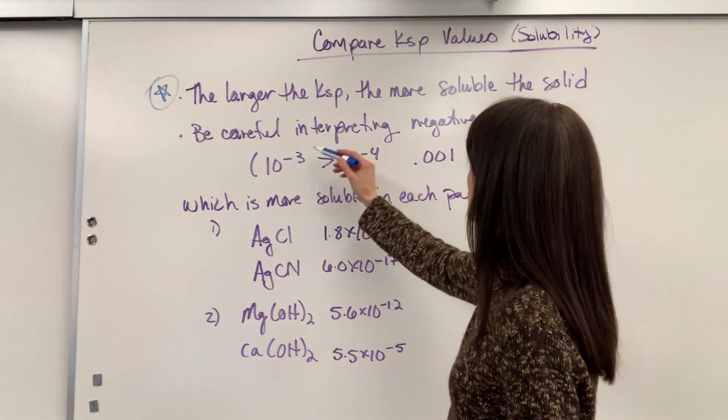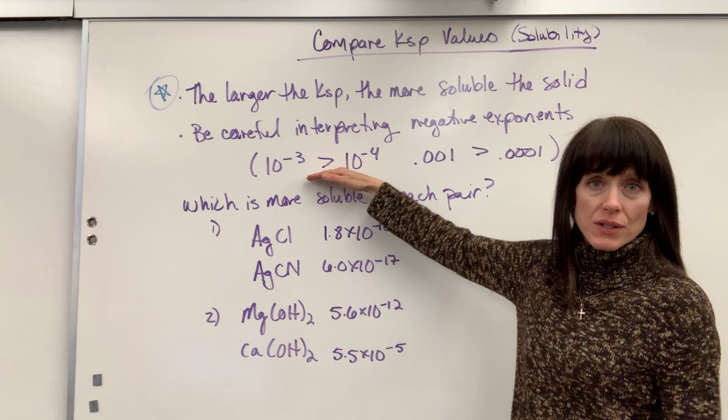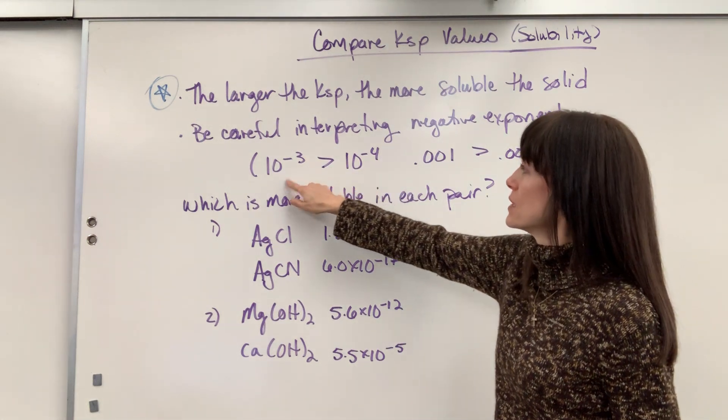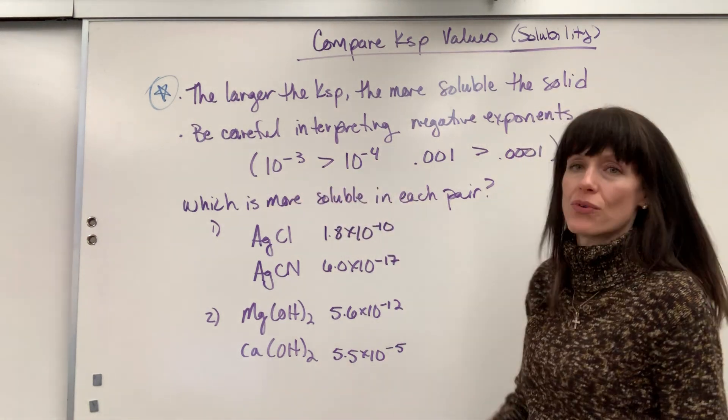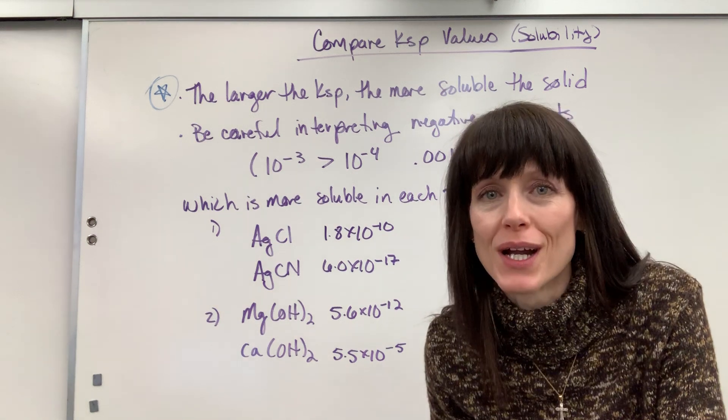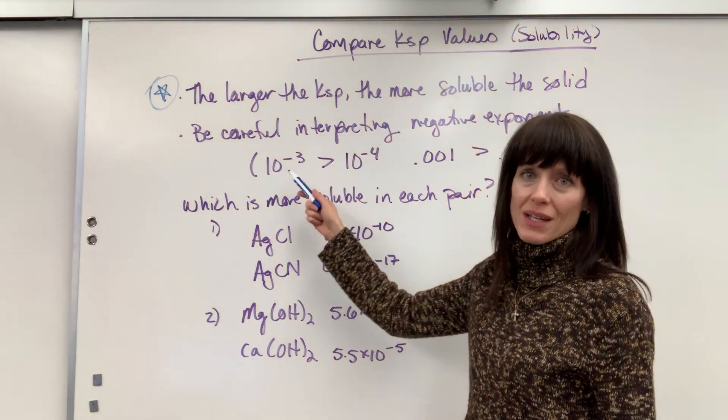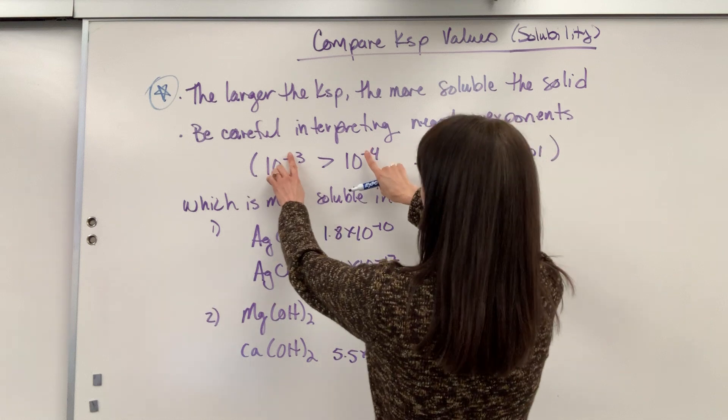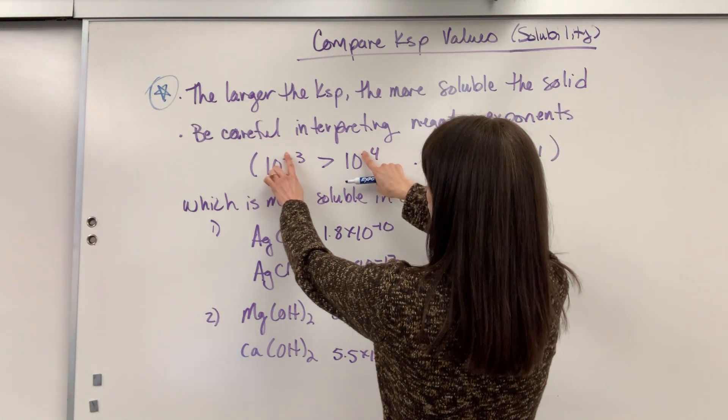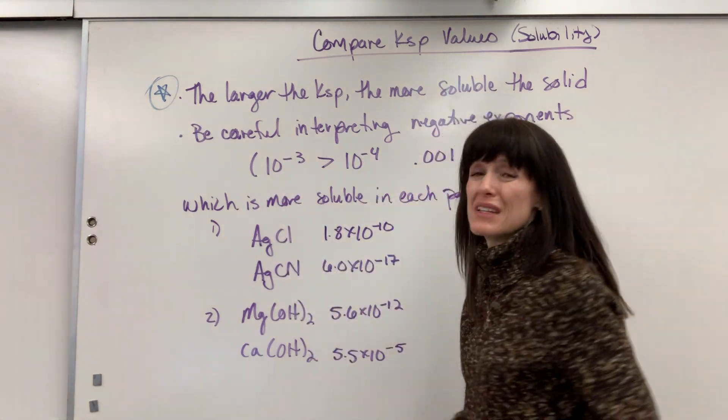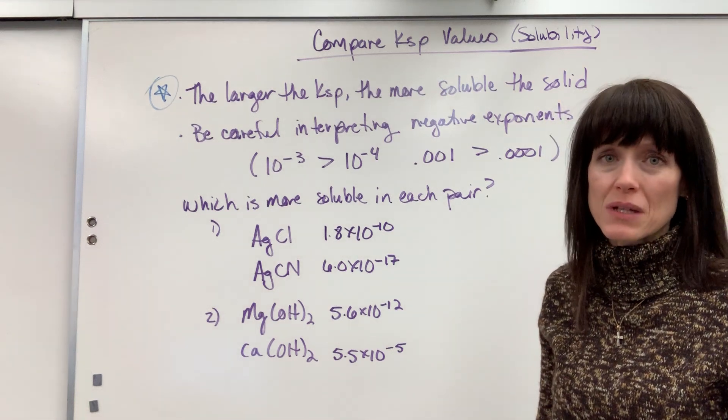Be really careful in interpreting negative exponents. So here's an example. If I'm comparing 10 to the minus 3 to 10 to the minus 4, which one's the bigger number? 10 to the minus 3. And it's because of that negative. Now, if those are positives, yeah, that's different. 10 to the 4 would be bigger. So you've got to remember those are negative exponents. Be really, really careful.